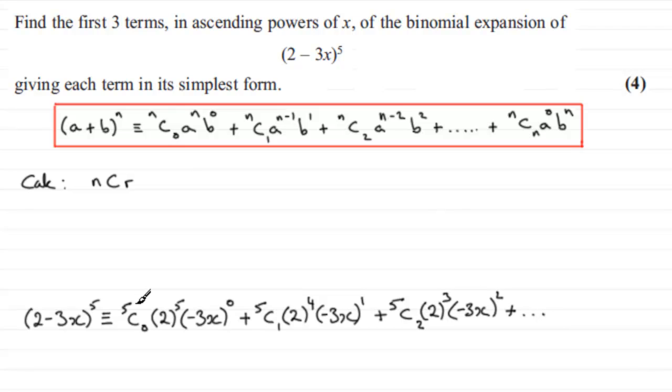So we need to work out now, what we mean by 5C0, 5C1, 5C2, and so on. Now, if you were using your calculator, 5C0, you just enter 5 into your calculator, press this key, and then enter 0. 5C0 should come out at 1.